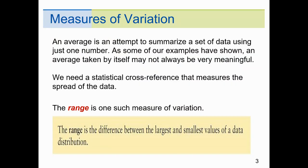An average is an attempt to summarize a set of data using just one number. As some of our examples have shown, an average taken by itself sometimes isn't very meaningful, especially if you have extremely high values or extremely low values. These numbers are often referred to as outliers, which can distort what's actually taking place. So that one number sometimes isn't very helpful. What we're saying is we need a statistical cross-reference that measures the spread of the data. How close are all these values in my data set to the middle number mean?